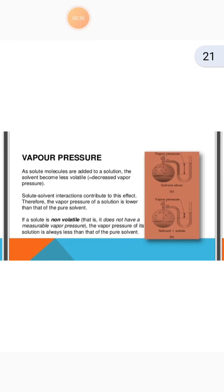First, vapour pressure. As solute molecules are added to a solution, the solvent becomes less volatile. Solute-solvent interactions contribute to this effect. Therefore, the vapour pressure of a solution is lower than that of the pure solvent. If a solute is non-volatile — meaning it does not have a measurable vapour pressure — the vapour pressure of its solution is always less than that of the pure solvent.